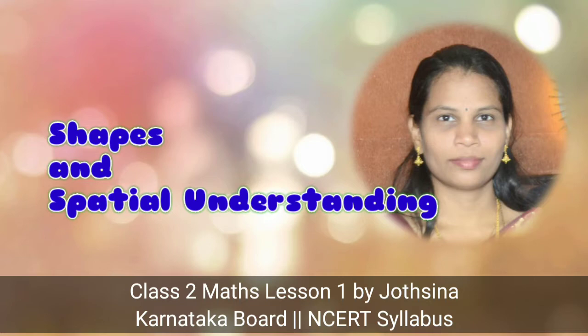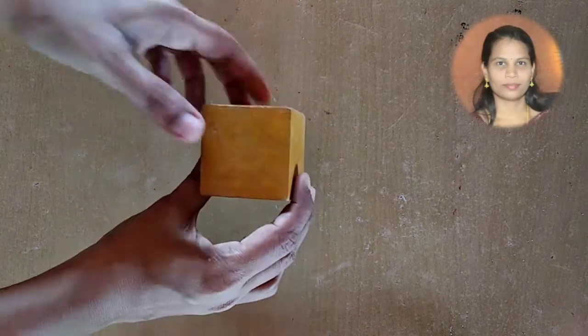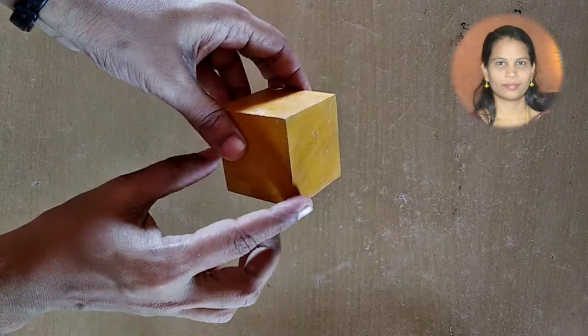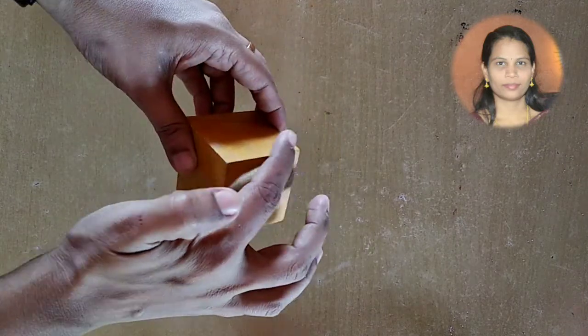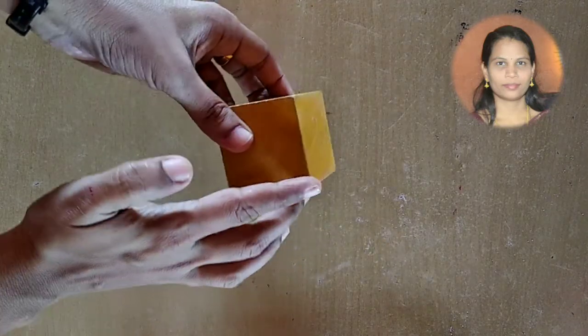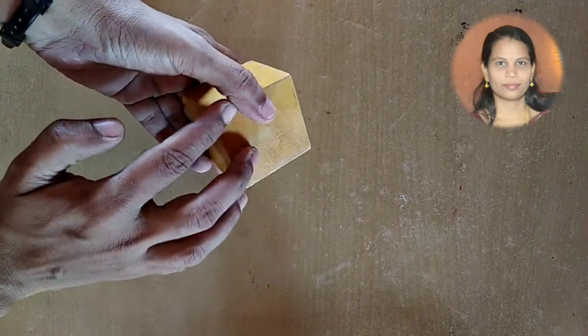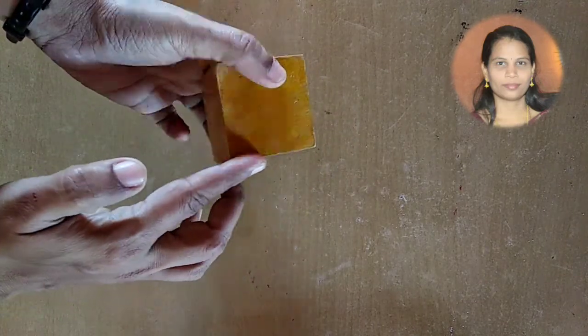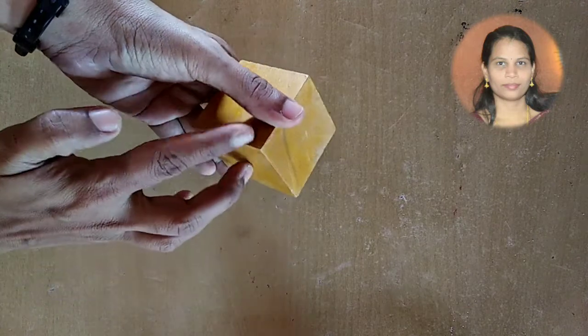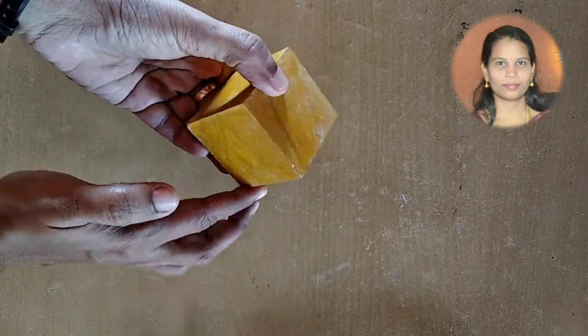Shapes and Spatial Understanding. Cube. This is a cube. This geometrical shape has 8 corners and 12 edges. It is surrounded with 6 faces. All the 6 faces are equal.